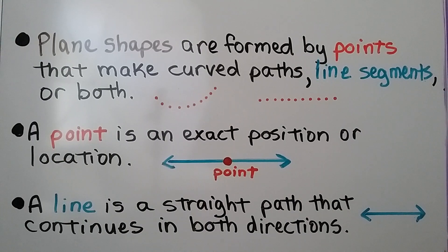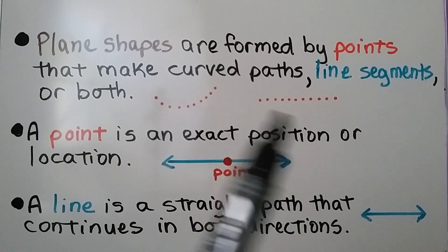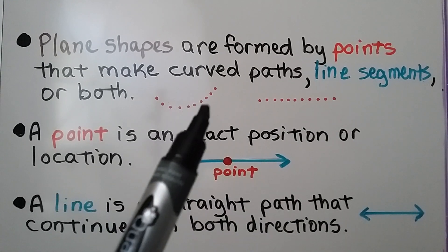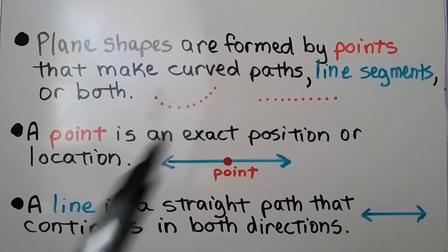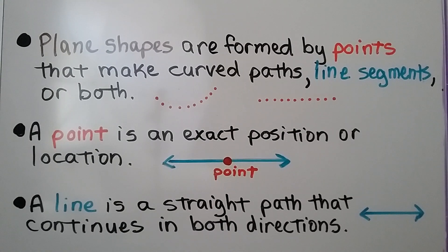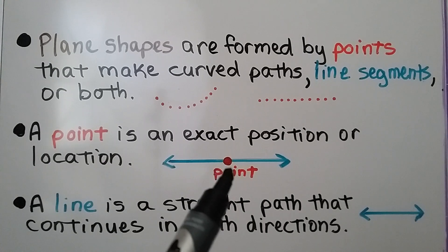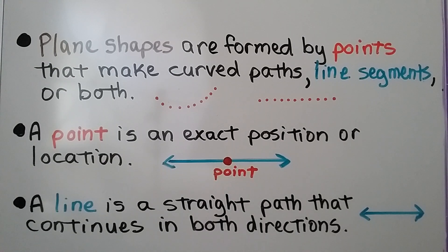Plane shapes are formed by points that make curved paths, line segments, or both. We could even put more points in between here, and we have a curved path. A point is an exact position or location. So if this was a street and your house was here, that would be the point where your house is — the exact location.